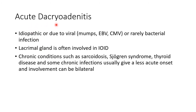Dacryoadenitis means inflammation of the lacrimal gland. It can be idiopathic or due to viral causes such as mumps, Epstein-Barr virus, and cytomegalovirus, or rarely due to bacterial infection. In idiopathic orbital inflammatory disease, the lacrimal gland is often involved. Chronic conditions such as sarcoidosis, Sjögren's syndrome, thyroid disease, and some chronic infections usually give a less acute onset and involvement can be bilateral.